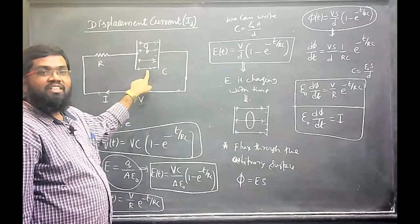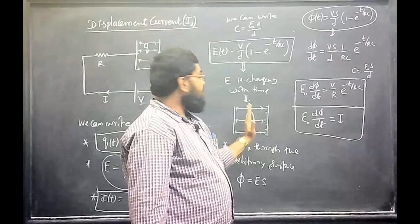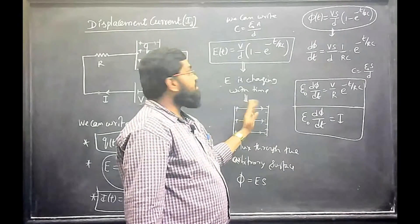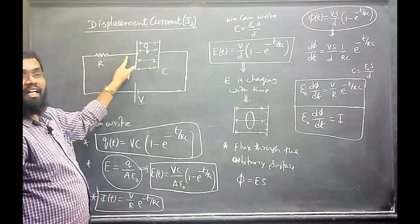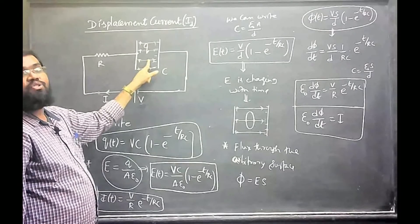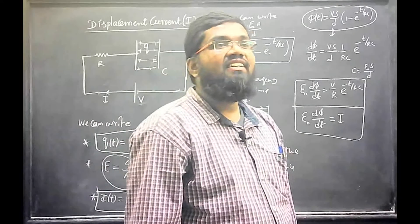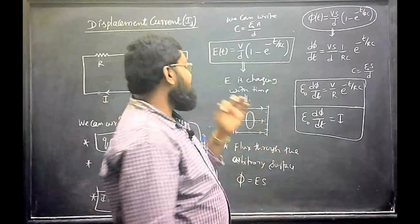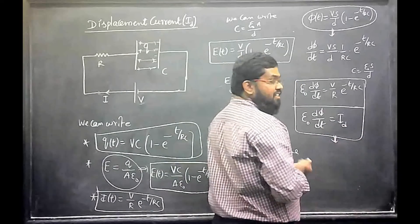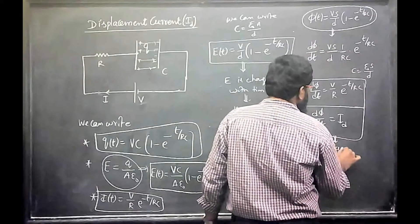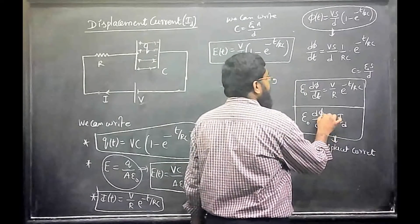In between the vacuum, still there is a current. In the external circuit we have a conduction current. But between the plates, the current flows through the change in electric field — there is no medium to conduct. This is known as the displacement current. The displacement current equals epsilon_naught * d(phi_E)/dt, where phi_E is the electric flux. The displacement current in this example is the same as the conduction current.